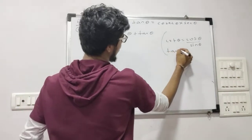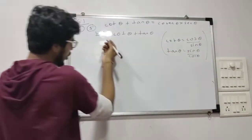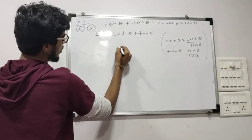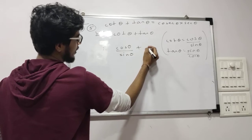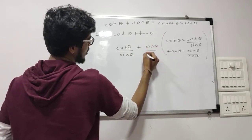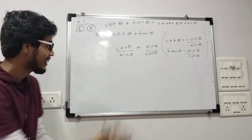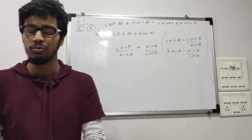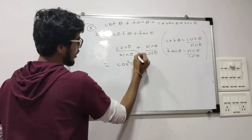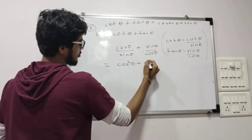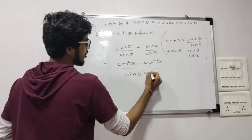Yes — cot theta is equal to cos theta upon sin theta, and tan theta is equal to sin theta upon cos theta. So therefore cot theta becomes cos theta upon sin theta, and tan theta becomes sin theta upon cos theta. Can we simply add them? The bases are not the same — one has sin and the other has cos. So we have to cross multiply. Therefore: cos squared theta plus sin squared theta, all over sin theta into cos theta.